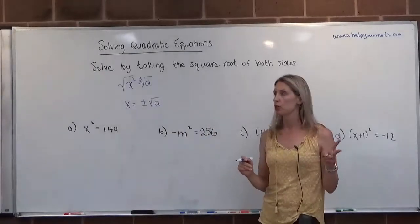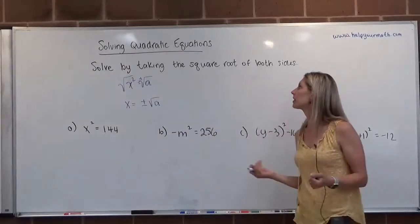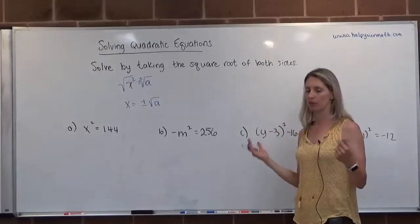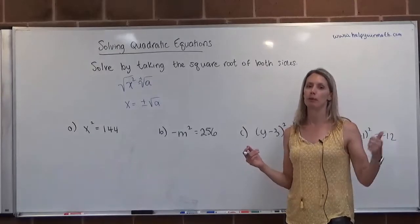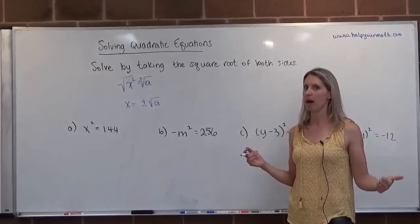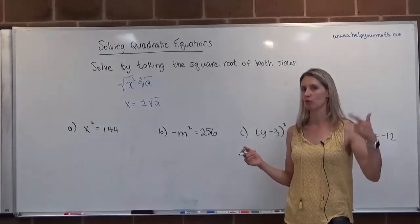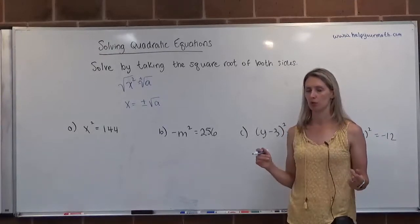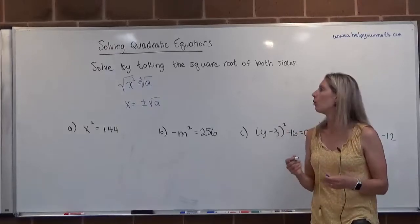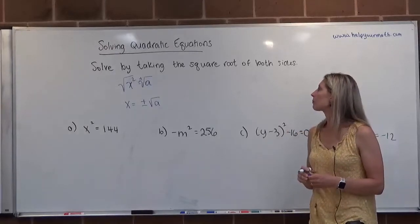There should be two solutions when solving a quadratic — very frequently there are two solutions. We need to make sure we include both the positive version and the negative version of the solution. So we just want to be really careful when we do that.